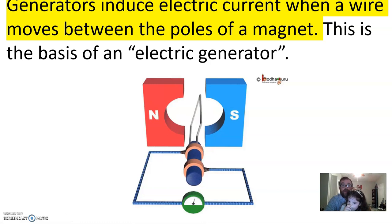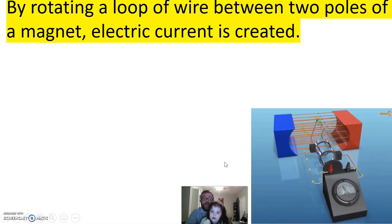So, as we said before, generators induce electric current when a wire moves between the poles of a magnet as the basis of an electric generator. And this is just another image doing the same thing. By rotating a loop of wire between two poles of a magnet, electric current is created. We've already said that.